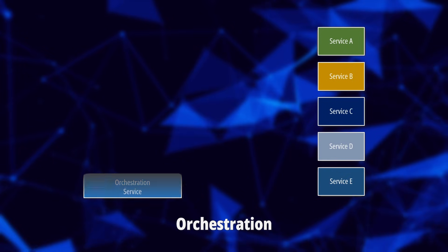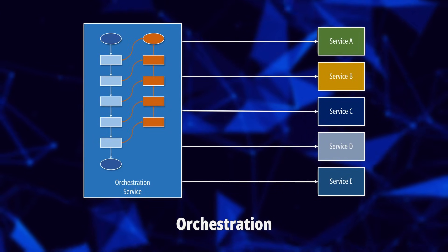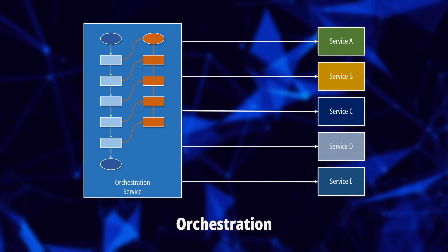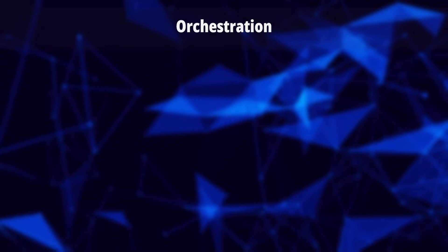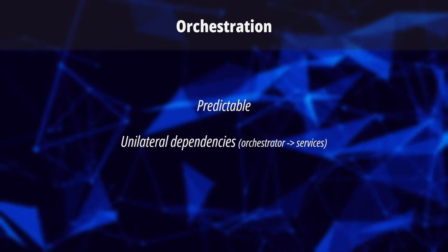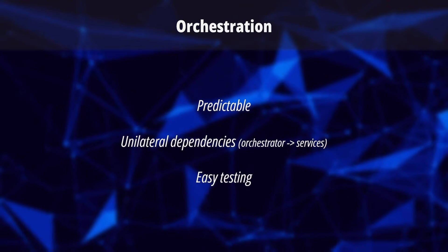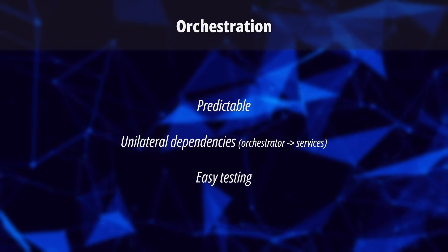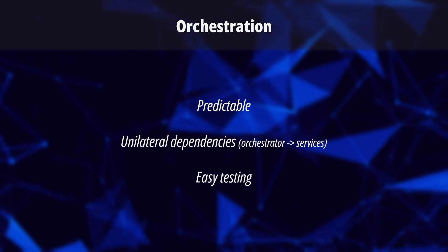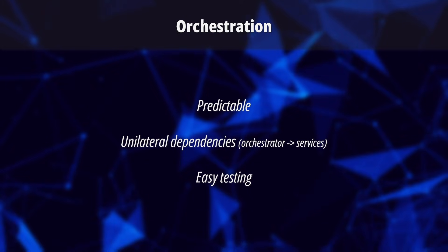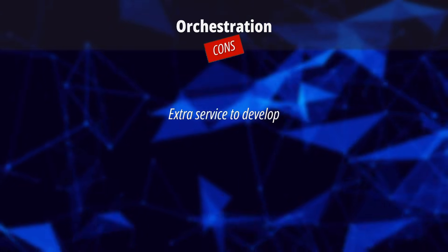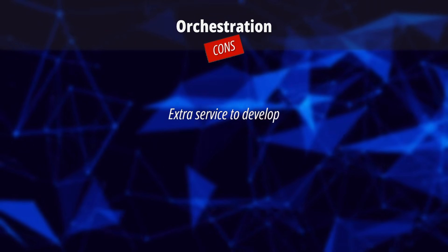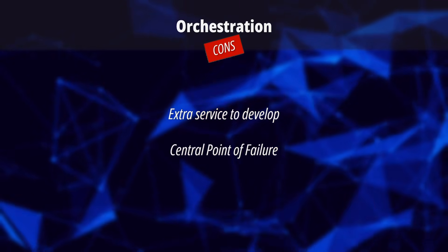In these scenarios, we can implement orchestration where the execution flow control is centralized. A single service is responsible for invoking all continuation or compensation steps. The orchestrator is unilaterally dependent on the saga participants, while the participants are fully decoupled between themselves. The workflow is more readable and predictable since it's defined entirely in the orchestrator's codebase. The only drawback is that it introduces a new service, creating an additional point of failure.